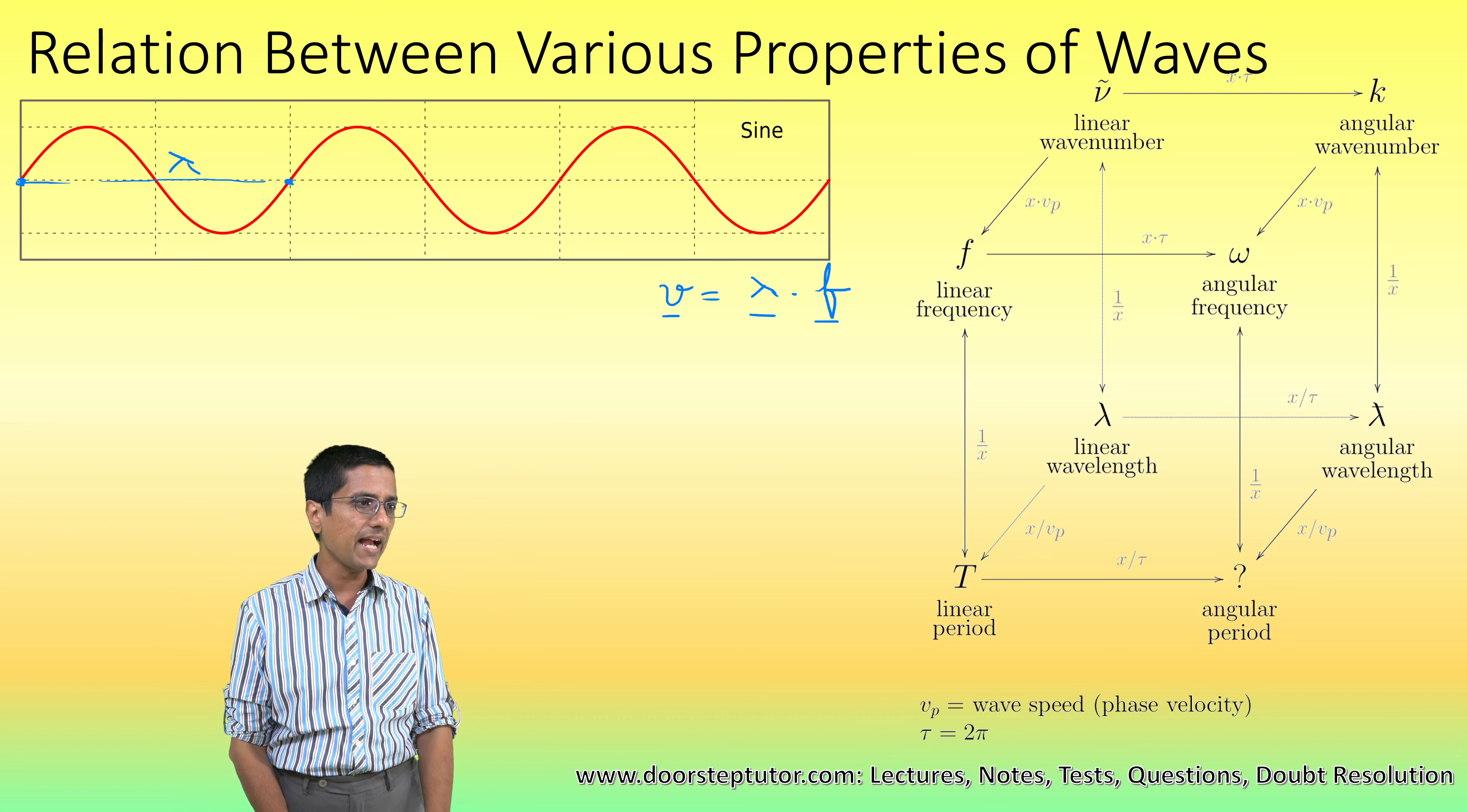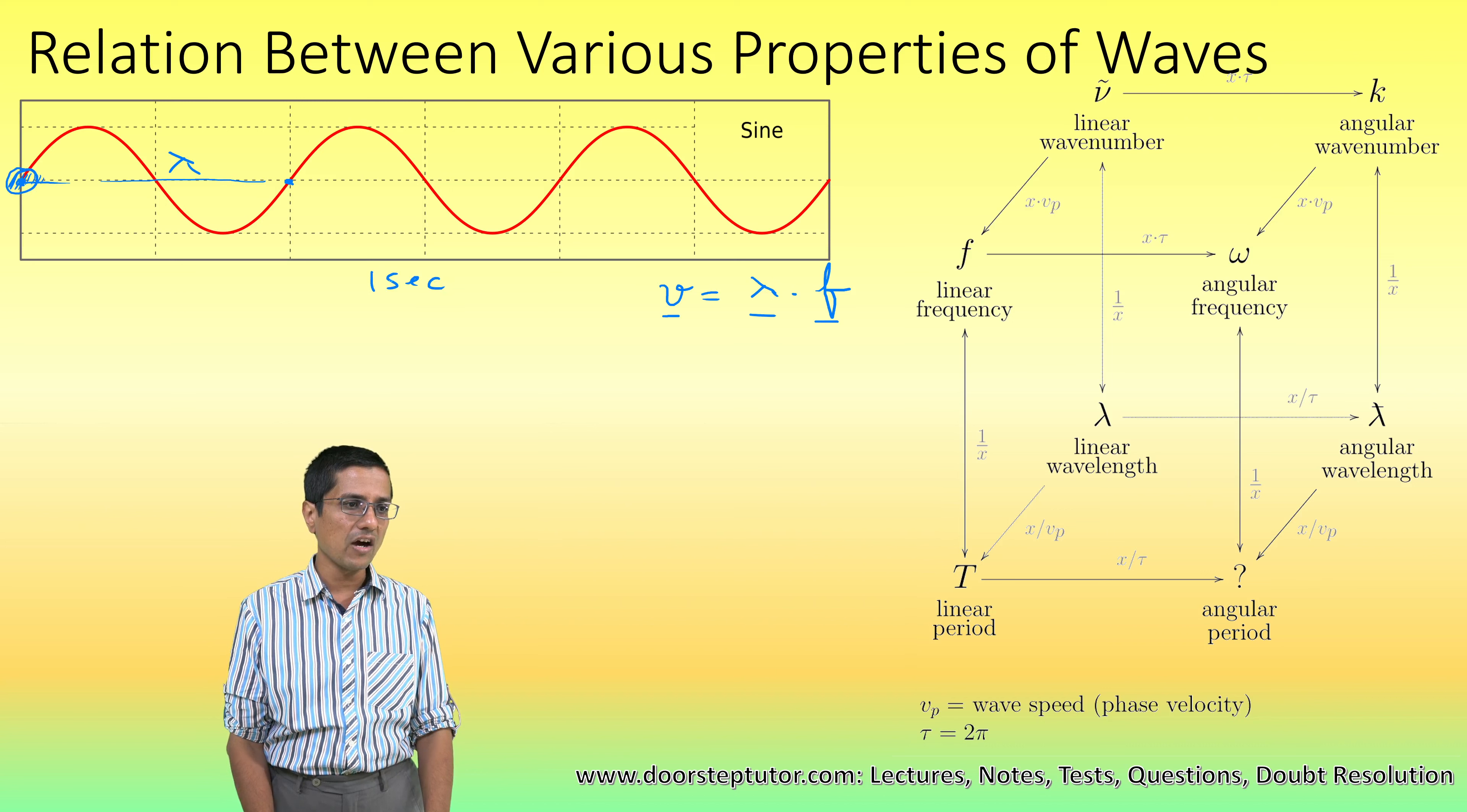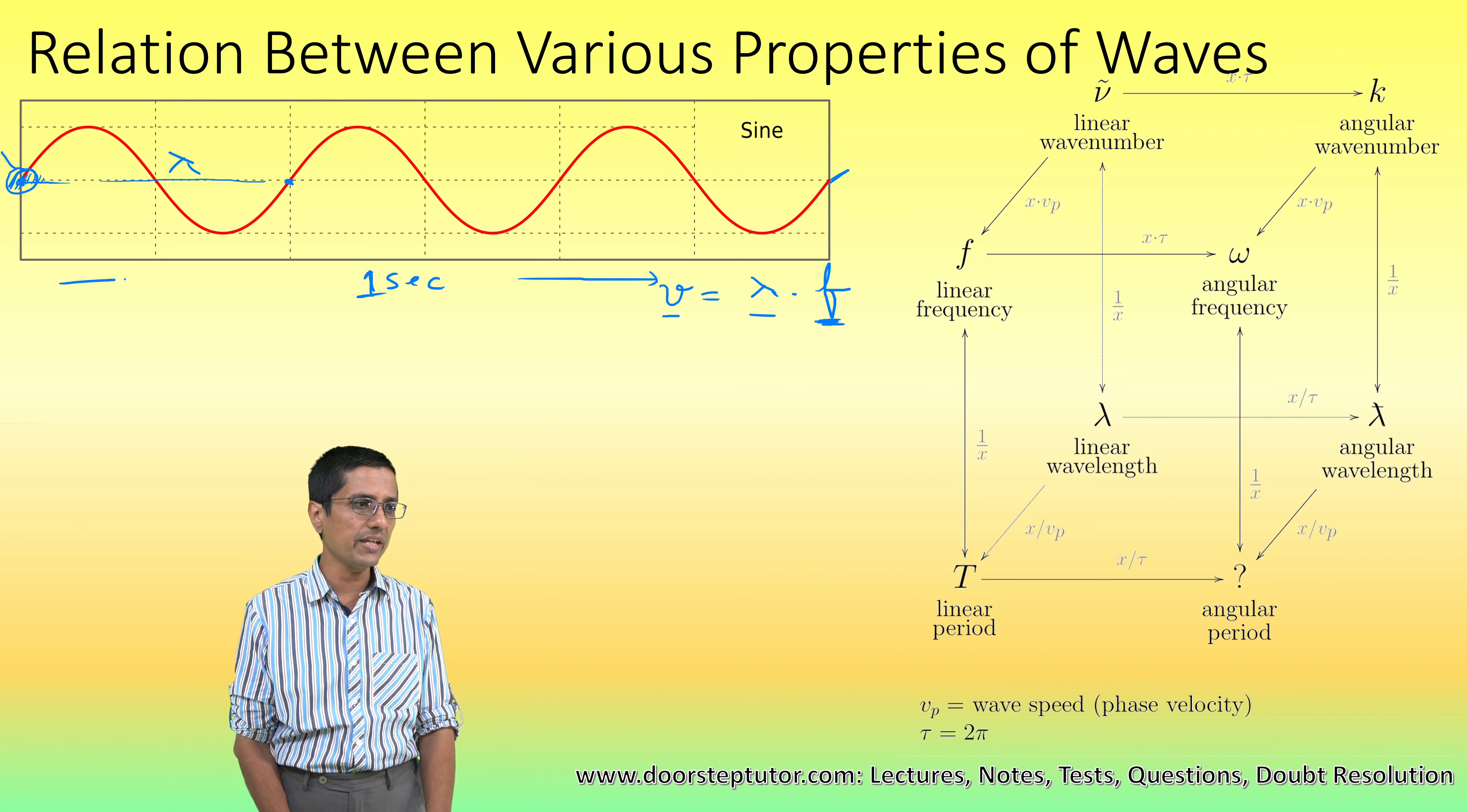Now let's say that we have a source of the wave here. So wave is being generated here, and in one second how many such waves are generated? F. So what is the distance from here to here? In one second these many waves were generated. So what is the distance from here to here?